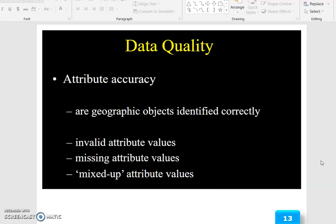Attribute accuracy asks are geographic objects identified correctly? Issues include invalid attribute values, missing attribute values, and mixed attribute values.